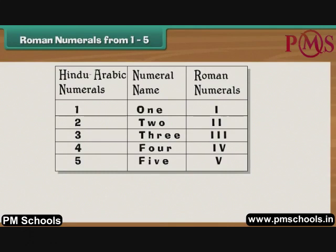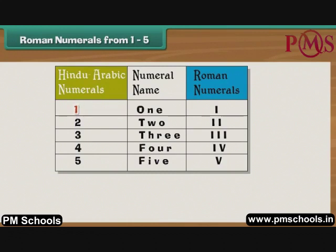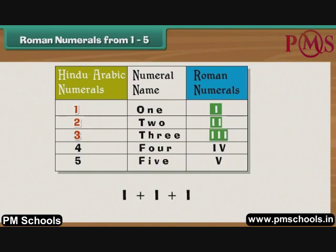Roman numerals from 1 to 5. The Roman numeral corresponding to the Hindu-Arabic 1 is I. As 2 is 1 plus 1, it is written as two I's. Similarly, as 3 is 1 plus 1 plus 1, it is written as three I's.